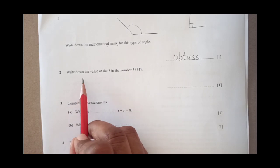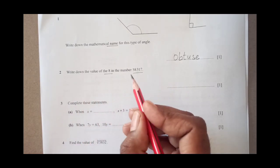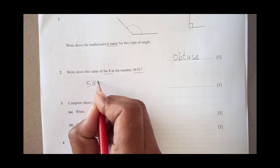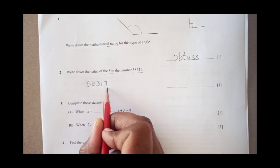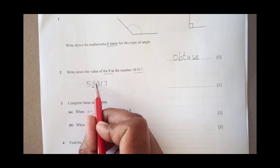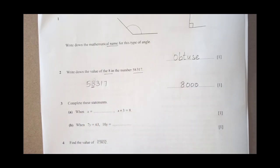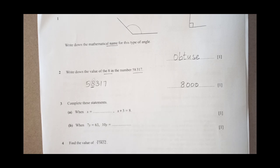Second number question. Write down the value of 8 in number this. We have 5, 8, 3, 1, 7. This is 1s, 10s, 100s. This is 1000s place. And when it comes 8, it will become 8,000. That is the value of 8.